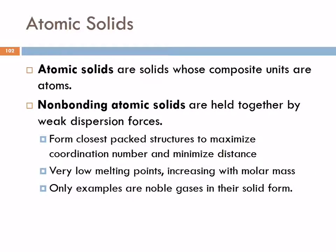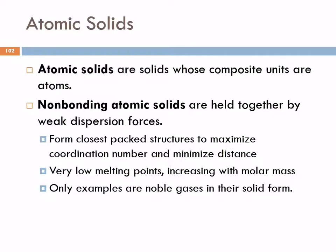Atomic solids — non-bonding type — have weak dispersion forces holding the atoms together. They arrange themselves using closest-pack structures to maximize the coordination number and minimize distance. The only examples of non-bonding atomic solids are the noble gases in their solid form. All the noble gases are gases at room temperature — you have to get them very, very cold to solidify them because the forces holding them together are so extremely weak; it's just dispersion forces.